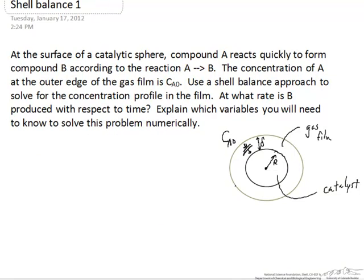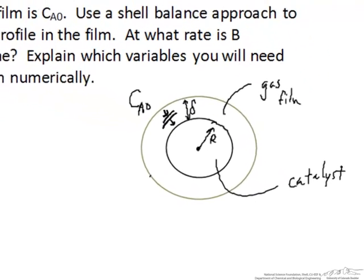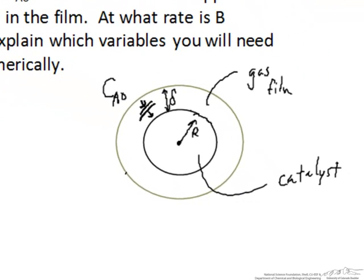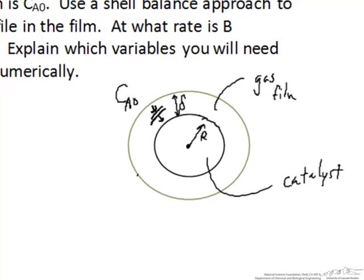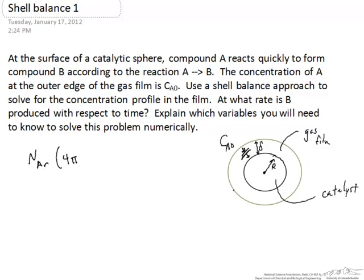To solve this problem we're going to do a mole balance through a spherical shell, and I've drawn just a little section of the shell within our gas film that surrounds the catalyst layer. That gas film has the thickness of delta, and we draw a little differential element inside that. It's a very thin slice inside our spherical region that we're going to do our material balance through.